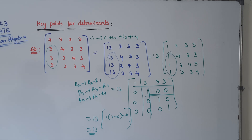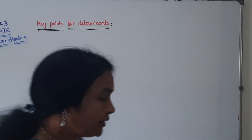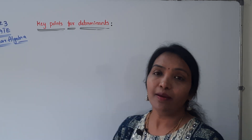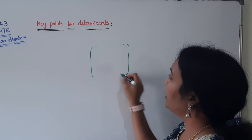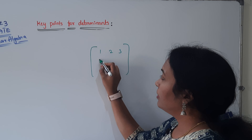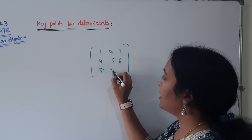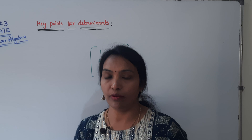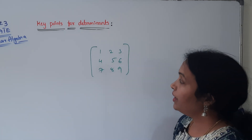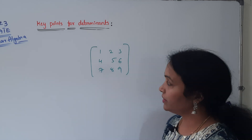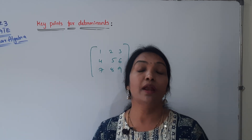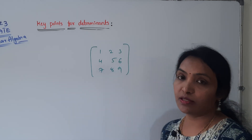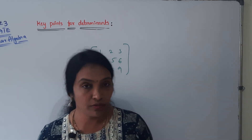Let's solve one more: the 3x3 matrix with elements 1, 2, 3 / 4, 5, 6 / 7, 8, 9. What is the determinant? If you recognize the repeating arithmetic progression pattern, you can directly say the determinant is 0. Do check this and try different questions — comment in the comment section to see what the determinant will be.